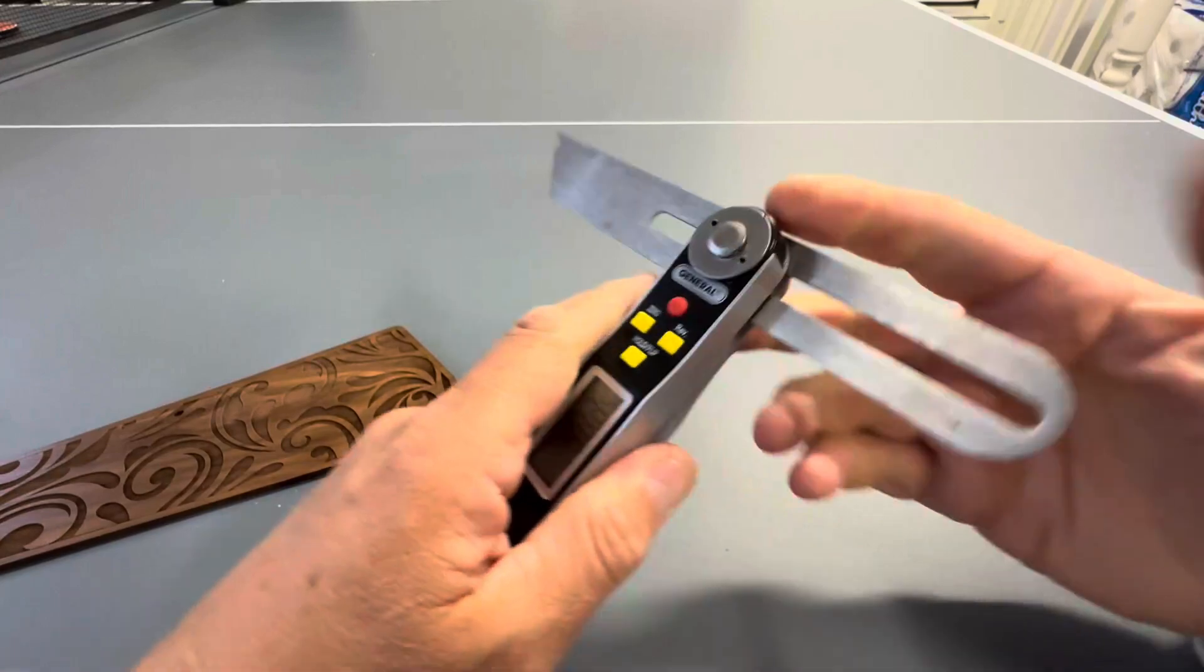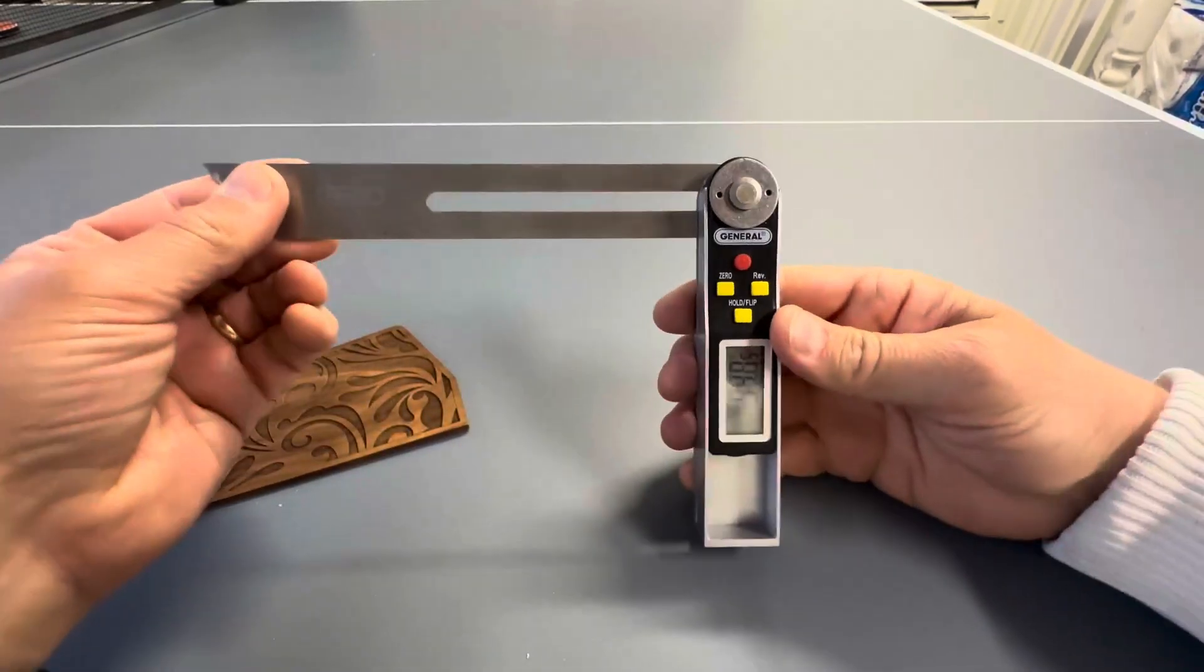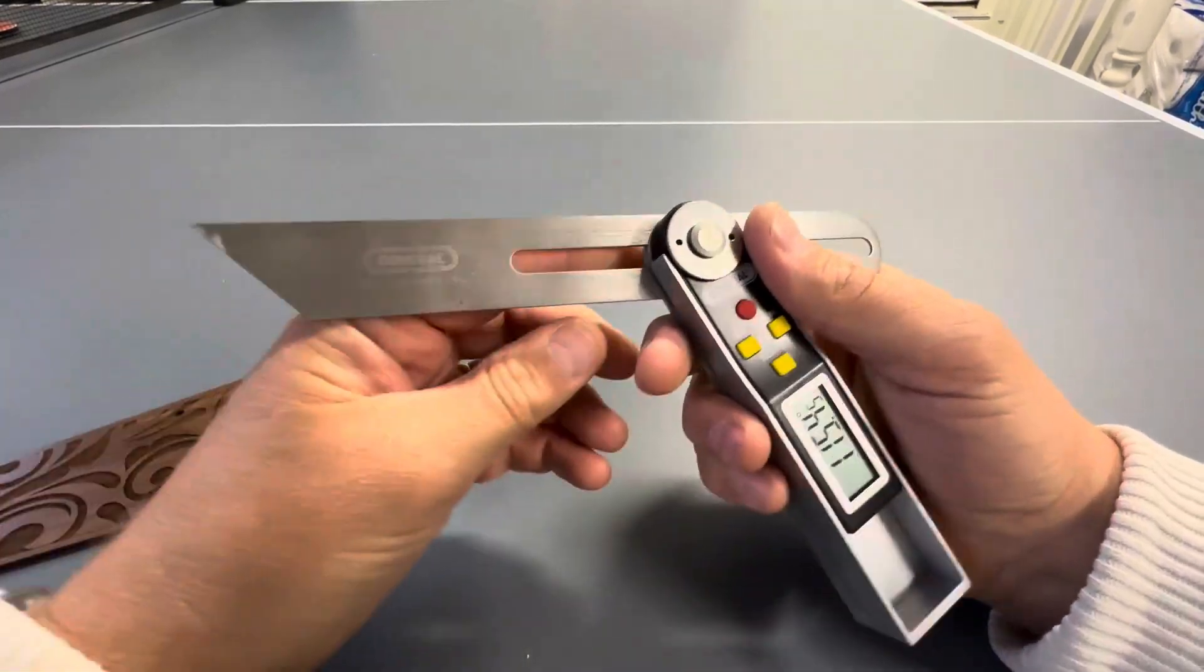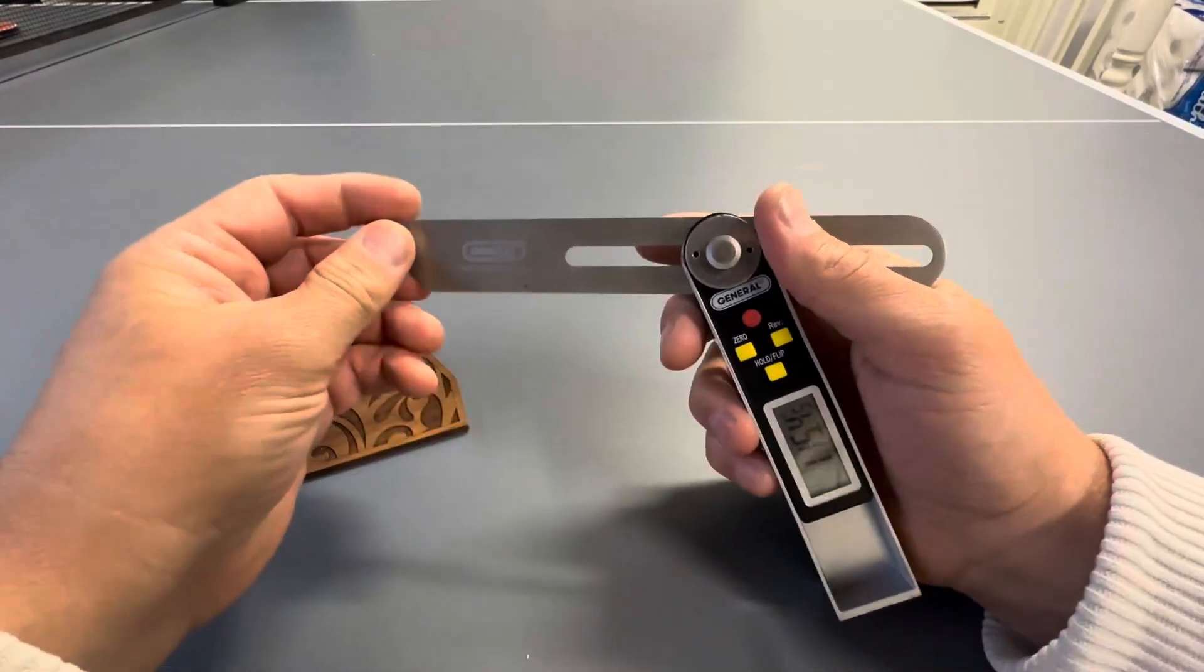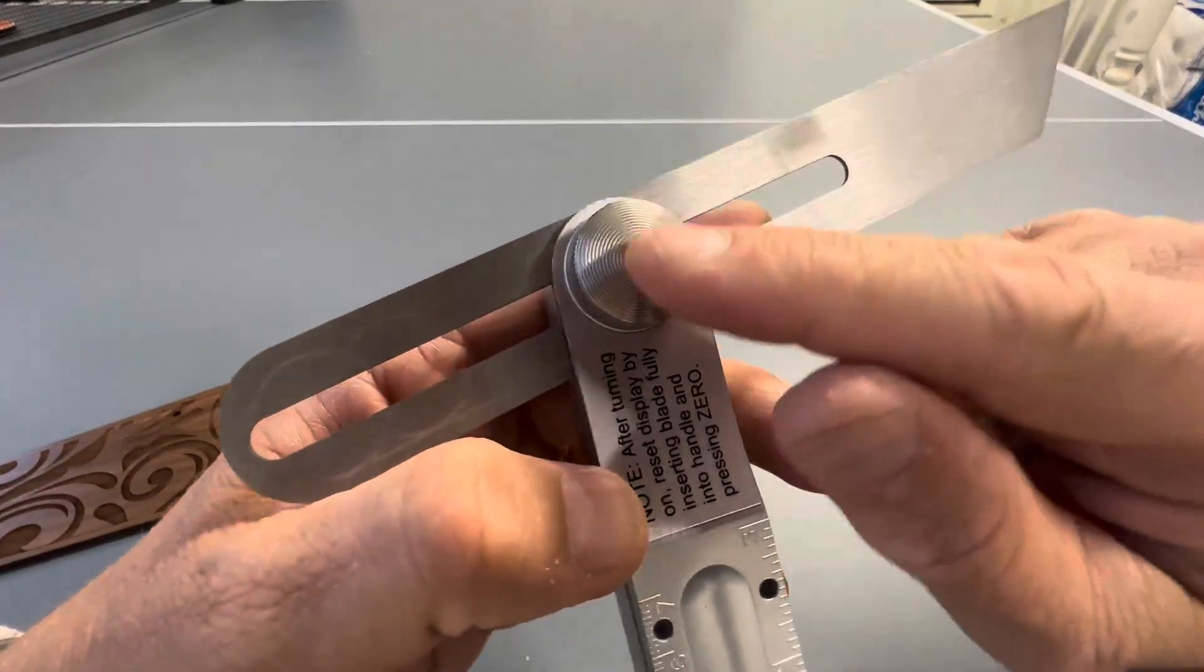Another nice thing about this is you can loosen this blade up and you can go out for a bigger angle. You can go this way for smaller, angle it out. You can tighten it up to keep that angle to make it more taut just by tightening this nut here. Very well machined.